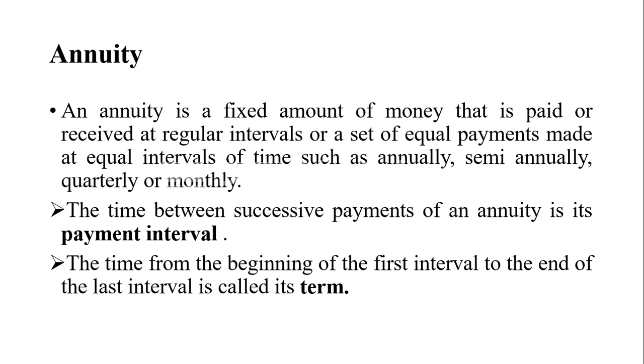In simple terms, annuity is a fixed value that we pay or receive at regular time patterns, such as annually every year, semi-annually every six months or two semi-annual periods per year, quarterly every three months or four quarters per year, or monthly every month or twelve months per year.